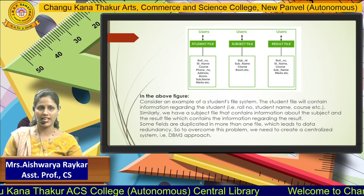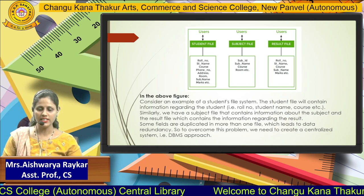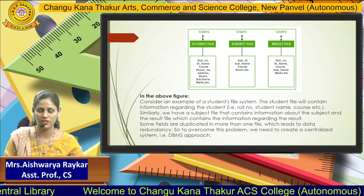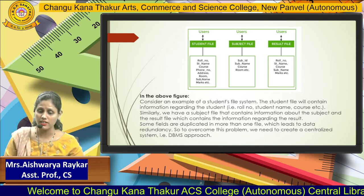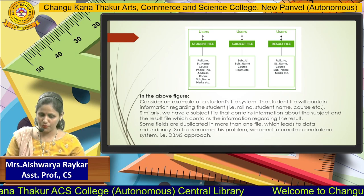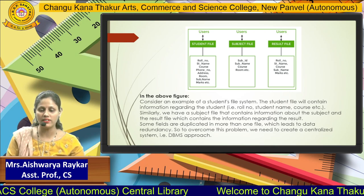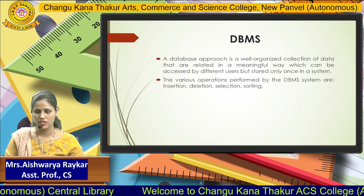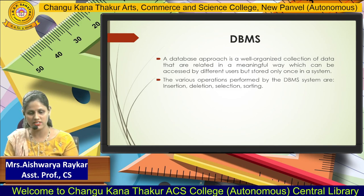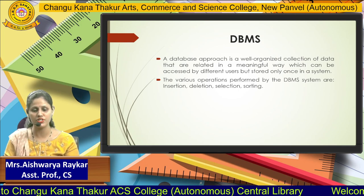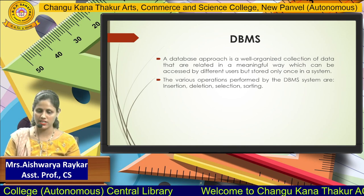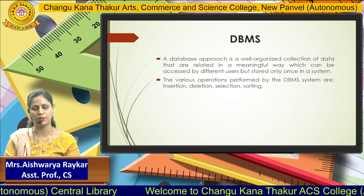Looking at this diagram, which summarizes the file system example: there are three files — student file, subject file, and result file. As you can see, the fields are repeated. This is not allowed in a database management system. To avoid this duplicacy, the database management approach is useful. The main purpose of DBMS is a well-organized collection of data related in a meaningful way, which can be accessed by different users but stored only once in a system, supporting operations like insertion, deletion, selection, and sorting.